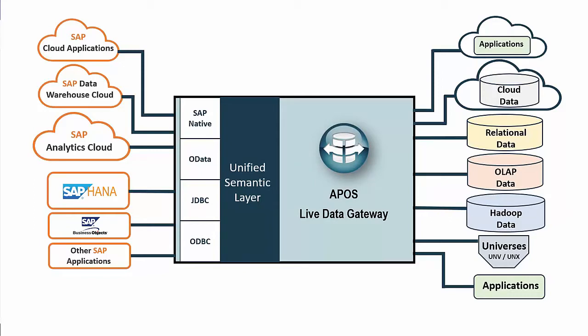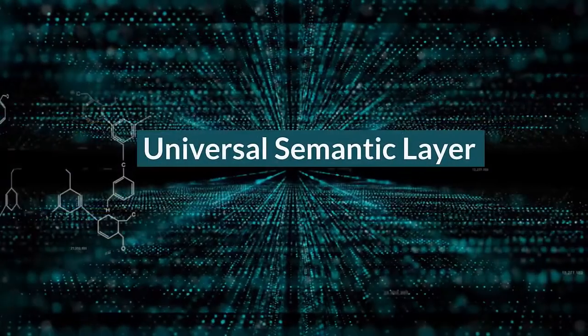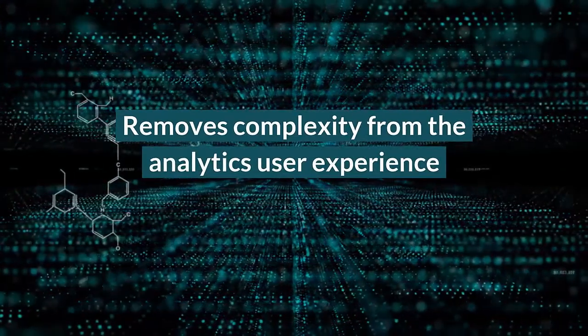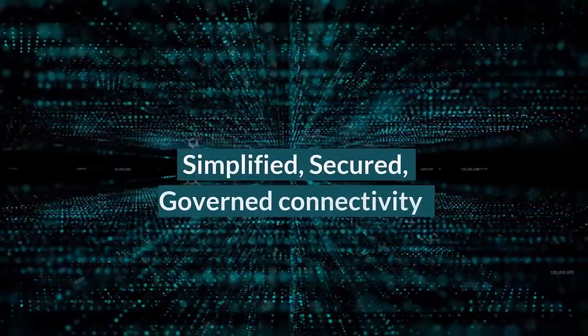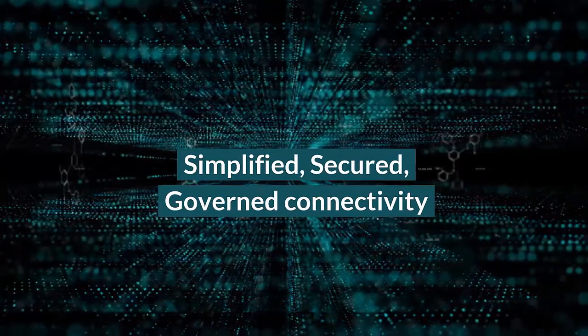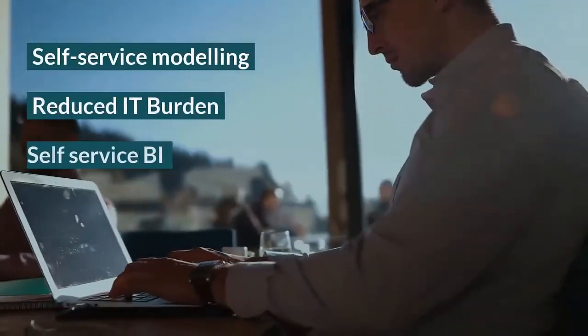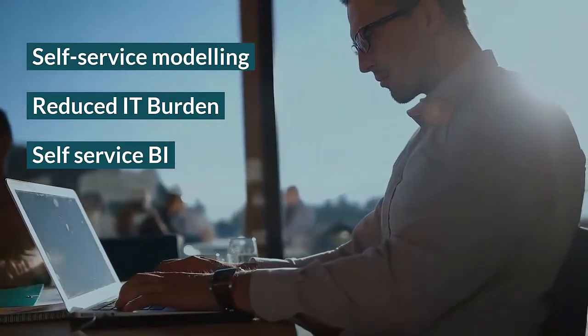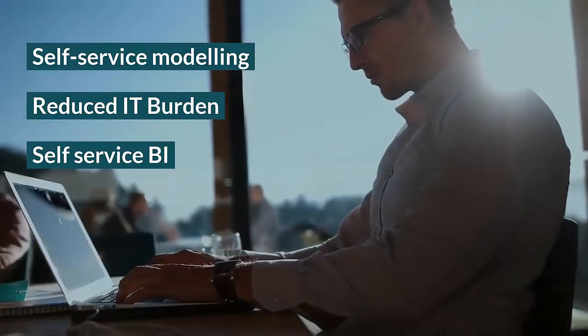A central component to the Live Data Gateway is its independent and unified semantic layer. This universal semantic layer removes the complexities of data structures and data linking from the analytics creation experience. These complexities are replaced with a common business layer that provides a simplified, secured, and governed connection point to all data assets. The universal semantic layer enables self-service data modeling, which reduces the burden placed on IT resources, while giving increased agility to address self-service BI needs.